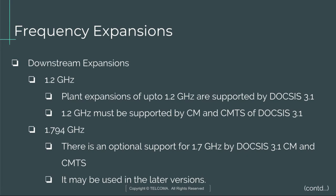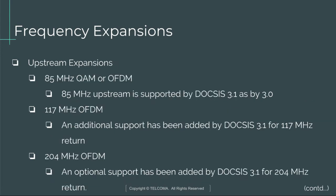For upstream expansions, 85 MHz QAM or OFDM upstream is supported by DOCSIS 3.1, as it was by DOCSIS 3.0. Additionally, DOCSIS 3.1 has added support for 117 MHz OFDM in the return path.